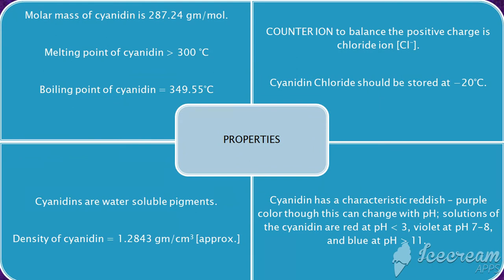The major properties of cyanidin are illustrated, with the most highlighted ones being that it is an odorless astringent pigment, i.e., it constricts body tissues. Also, it acts as a pH indicator, being red in acidic medium and blue when the medium turns basic.